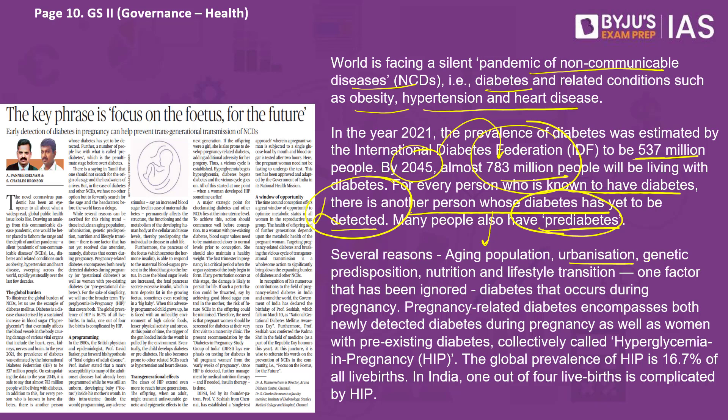Another reason is genetic predisposition — diabetes gets passed on from generation to generation. There is a high chance that if a mother had diabetes at the time of giving birth, the baby would also develop diabetes at some point. Then there is nutrition and lifestyle. All these together have meant that the number of people suffering from diabetes in India and other developing nations is increasing day by day.